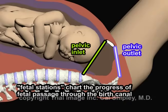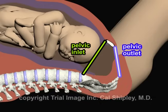In order to chart the position of the fetus as it moves through the birth canal, a system of fetal stations was devised many years ago and is still in use today. There are some variations, but the most commonly used fetal station system today assigns a value of minus five to the pelvic inlet and a value of plus five to the pelvic outlet.